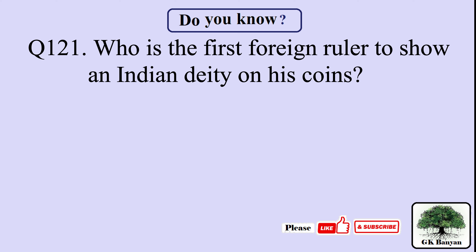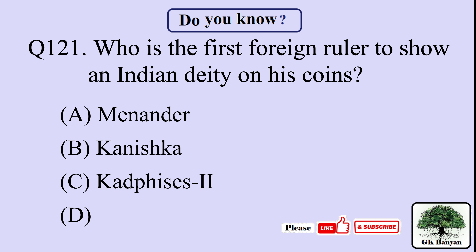Question 121. Who is the first foreign ruler to show an Indian deity on its coins? Your options are: A. Menander, B. Kanishka, C. Kadphises the Second, D. Moise.